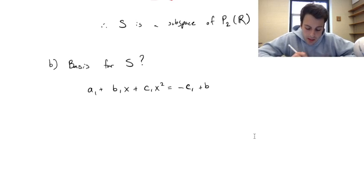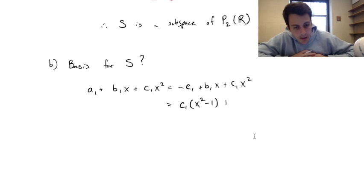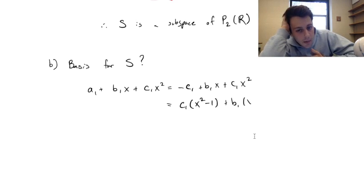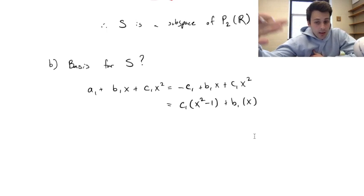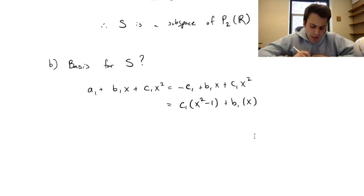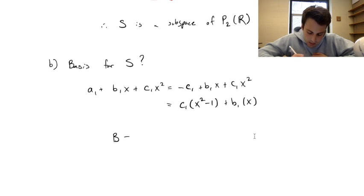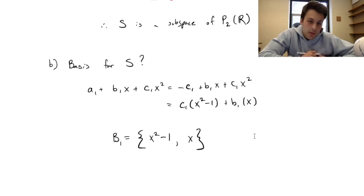Pulling out the c1 term, we get c1·(x² − 1) plus b1·x. This is just a linear combination of (x² − 1) and x. Since these two are linearly independent — we can't write one as a combination of the other — the basis B1 is {x² − 1, x}.